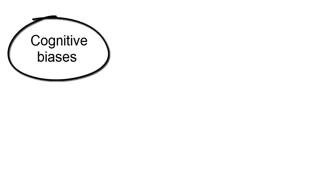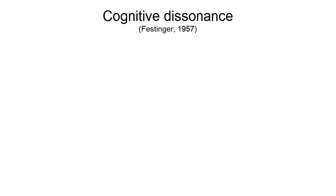Perhaps the best known theory about cognitive biases is the theory of cognitive dissonance. Cognitive dissonance is a theory from psychology that explains how people handle conflicting feelings, ideas, or beliefs.